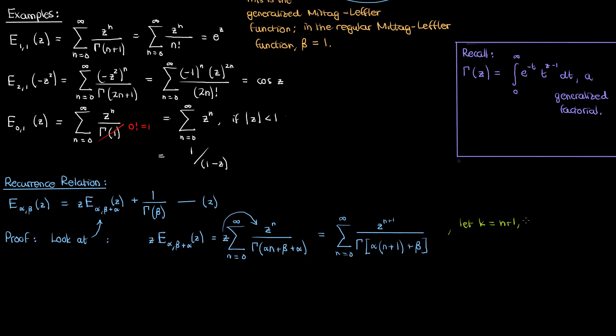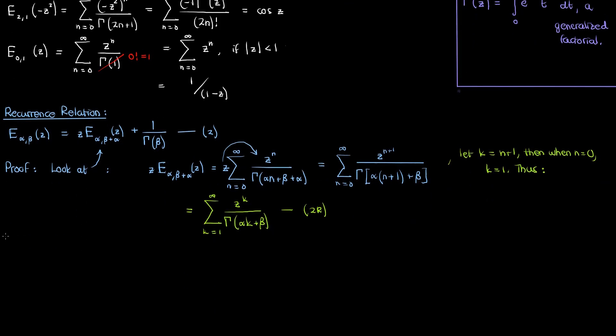Let's now change our index by setting k as n plus 1. In that case when n is 0, k is 1, so now we have our summation starting at k equals 1, but now the n plus 1 is replaced by a simple k. I'll call this equation 2r to denote the right hand side of equation 2, or part of the right hand side.